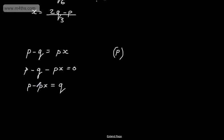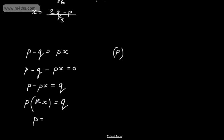I want to make p the subject and I can see now that p is common to both of these terms. So factoring it out, we'd have p(1 - x) = q. We want to make p the subject, so we divide both sides by the content of the bracket, giving p = q / (1 - x). So all we've done is made p the subject of the equation.